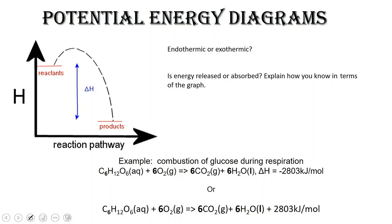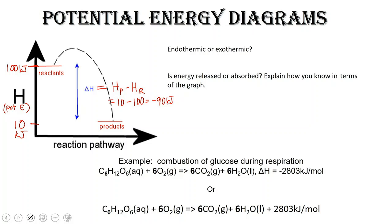Let's give some arbitrary numbers for our products and our reactants. Let's say this is 10 kilojoules, and here we have 100 kilojoules. Remember that H is still the potential energy, enthalpy or potential energy. So delta H is going to be the energy of the products minus the energy of the reactants, which would be 10 minus 100, giving us minus 90 kilojoules. We've got a negative value, so that must mean that this is an exothermic reaction, and energy is released.